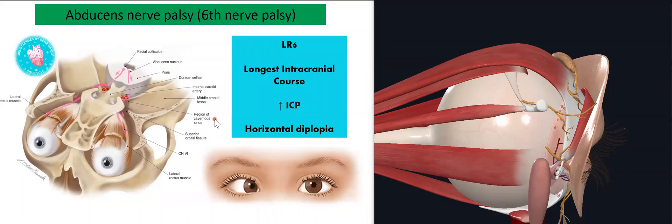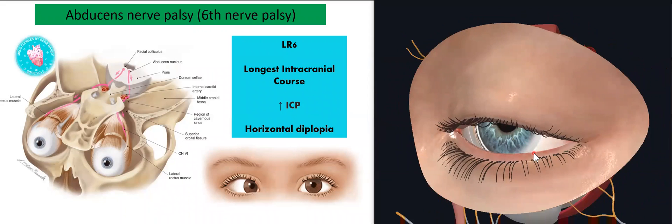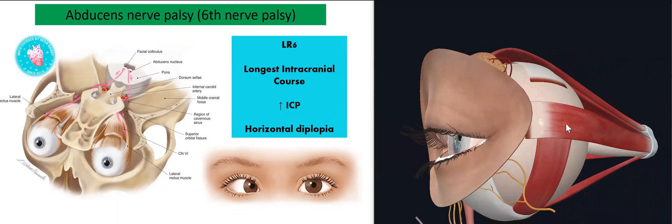For abducens nerve palsy: remember LR6 has the longest intracranial course, so raised ICP can compress it. The lateral rectus is attached in front of the equator and does abduction. When the abducens is injured, the eye will be adducted due to unopposed action of the medial rectus. Any mass-occupying lesion causing raised intracranial pressure can compress the abducens nerve, causing horizontal diplopia.